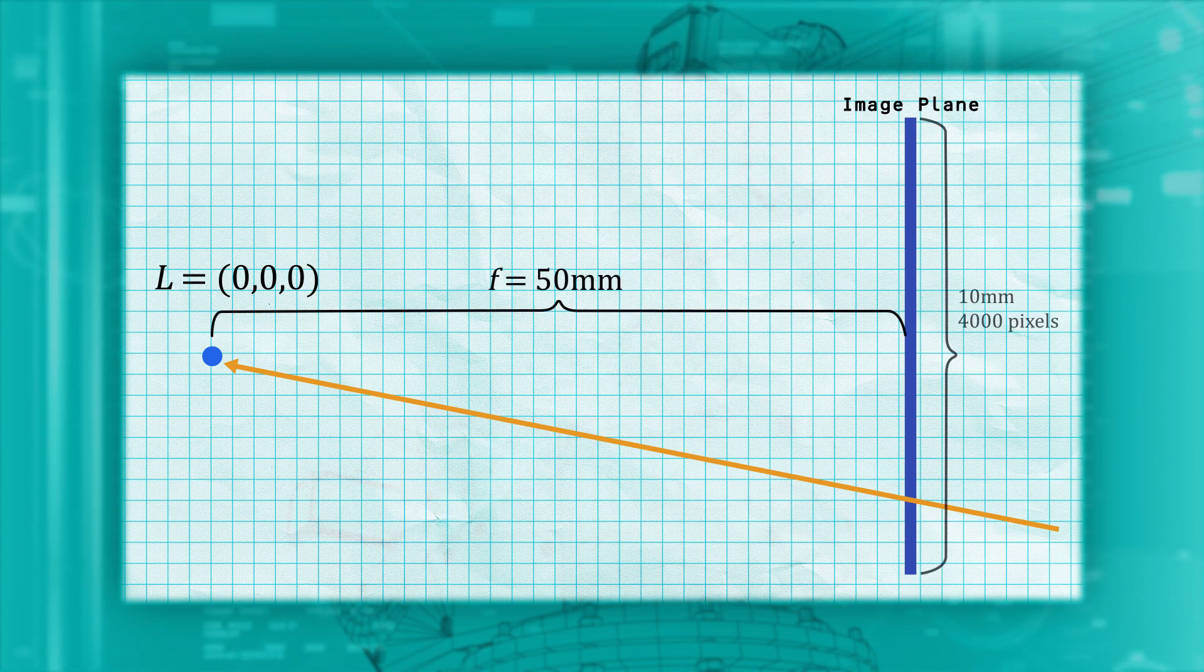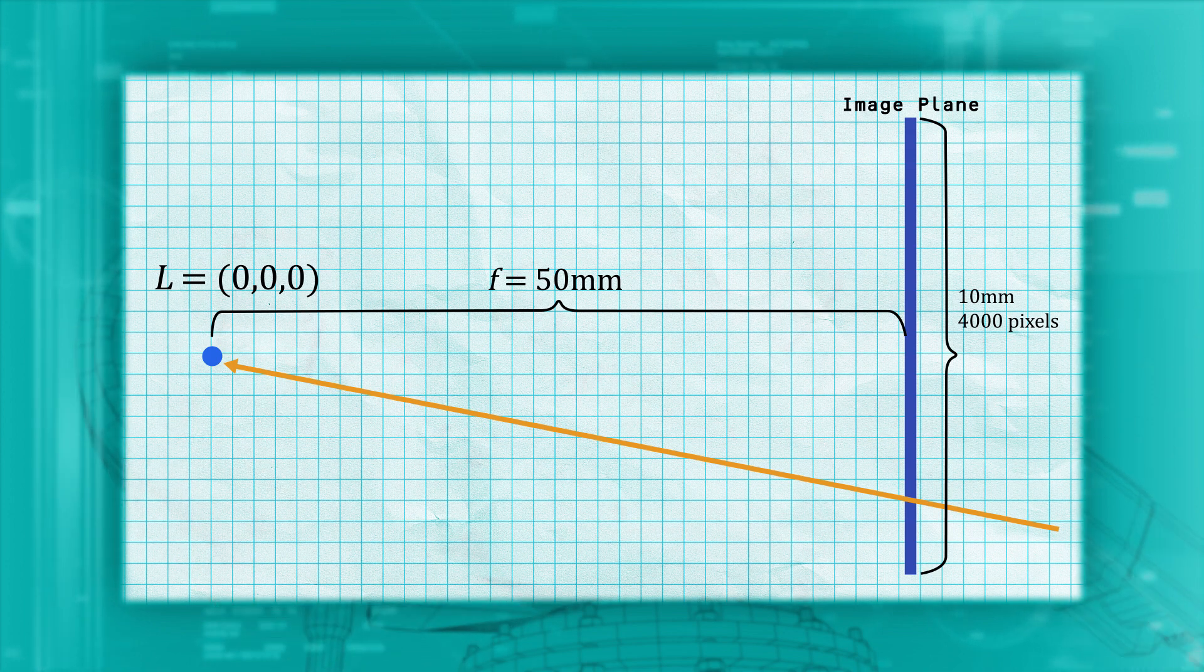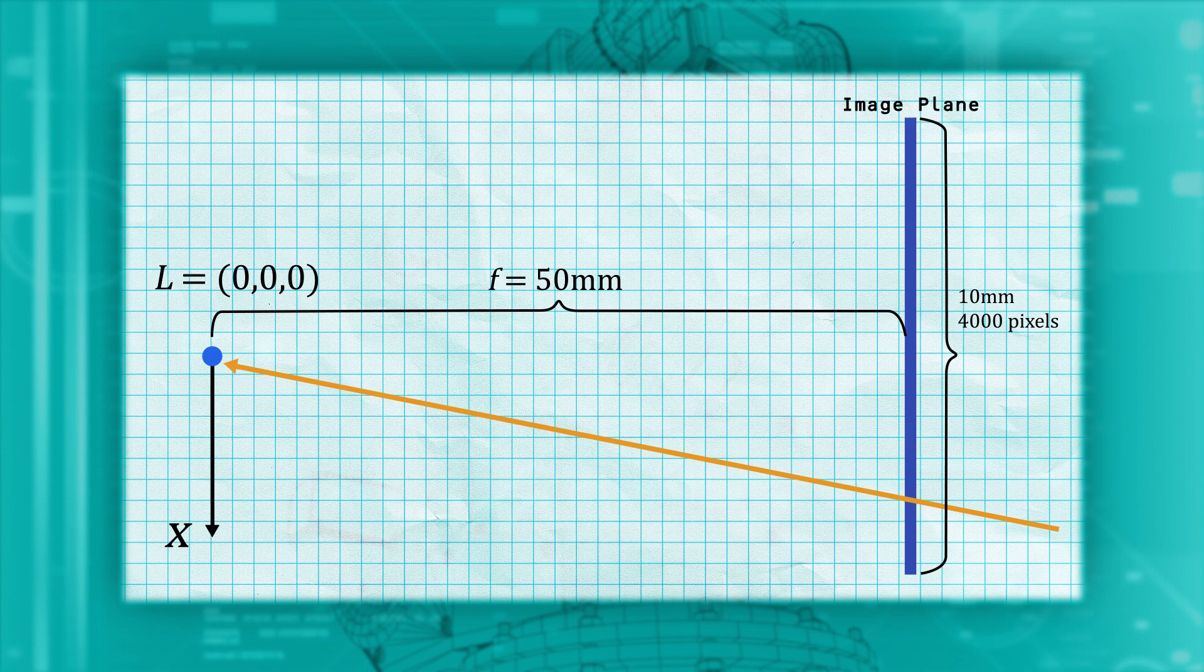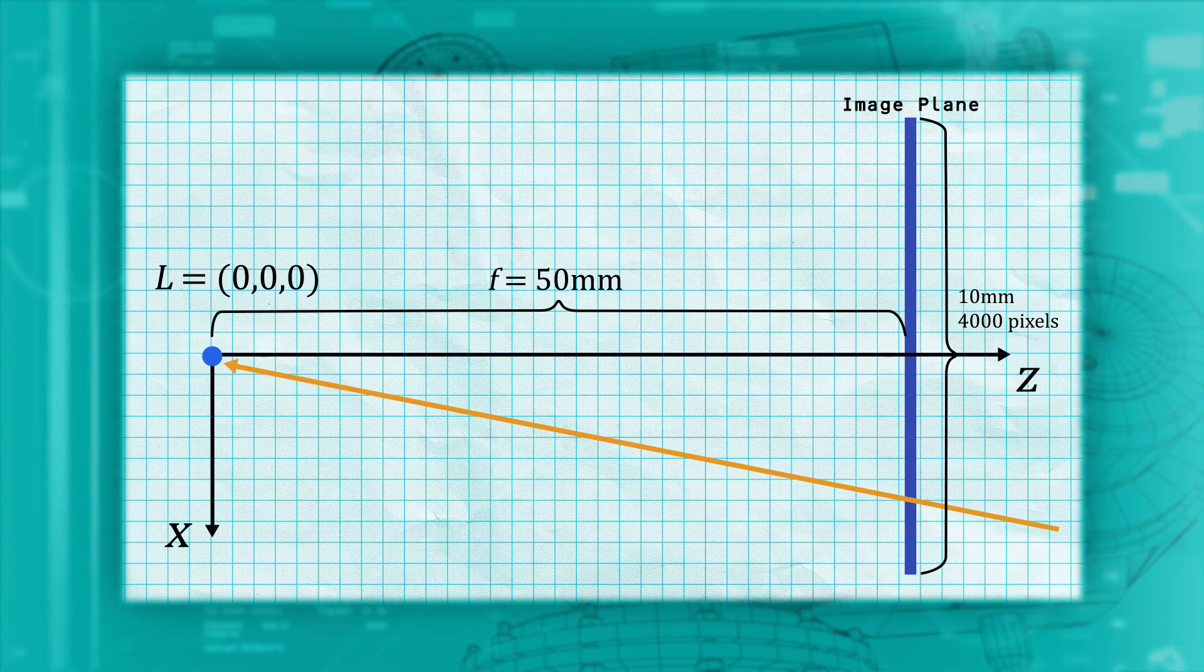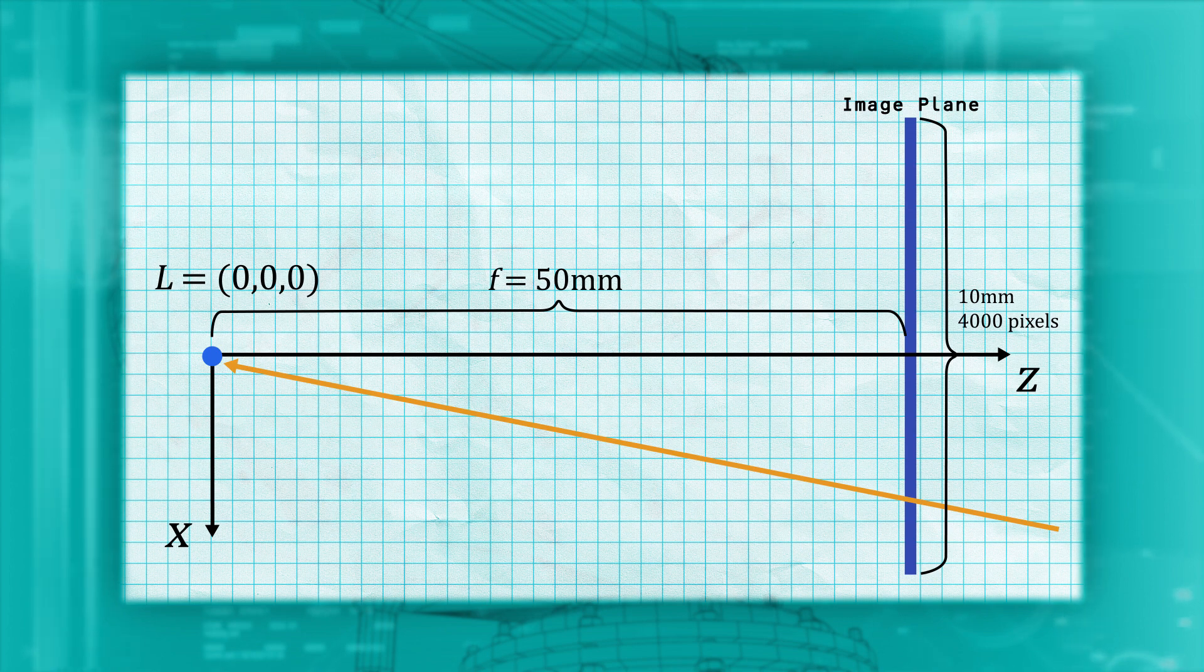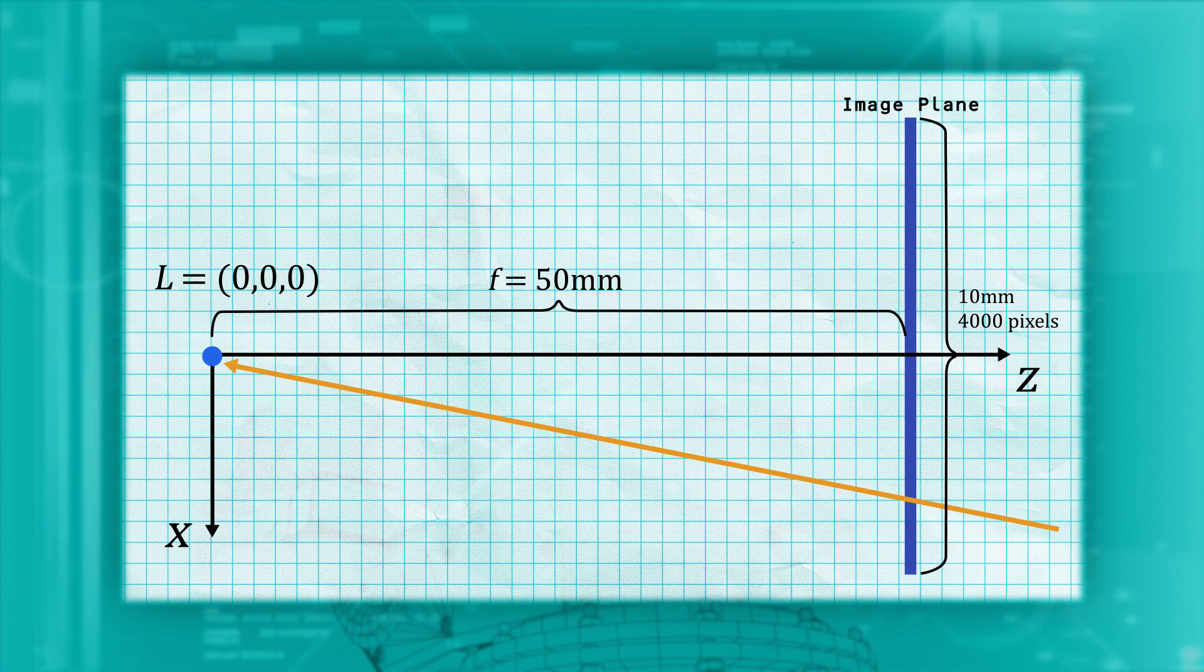The sensor is 10 millimeters wide and is also 4000 pixels wide. We know that the image plane is the XY plane, so the Z axis is perpendicular to that and points out in the same direction the camera is pointing. We also know where our point P shows up in our image. That is, we know the X coordinate for point A on the image plane.